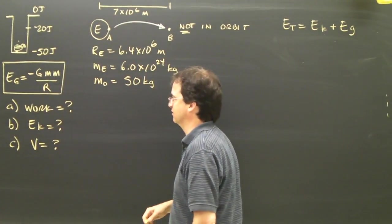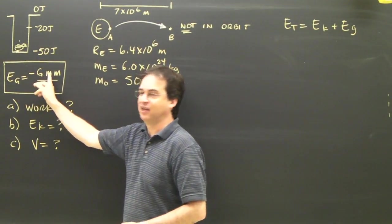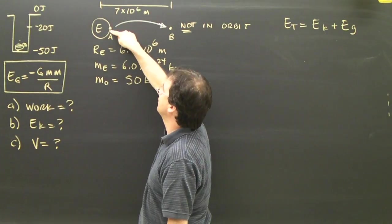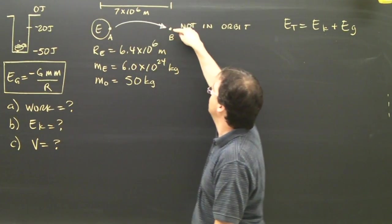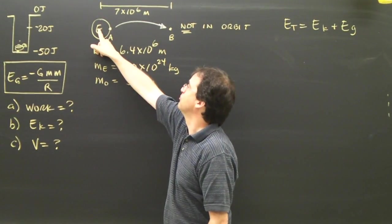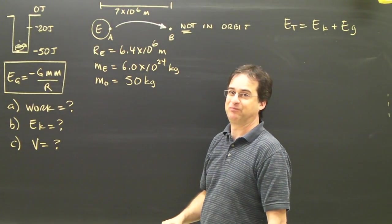So let's look at it with more complex numbers. Here's my formula, negative GMM over R. Here's the Earth. I want to take an object here on the surface of the Earth and move it up to here, 7 times 10 to the 6 meters from the center of the Earth.